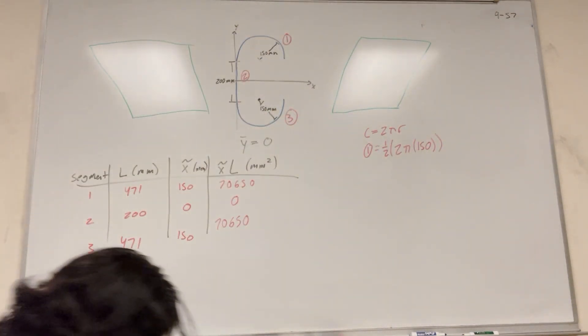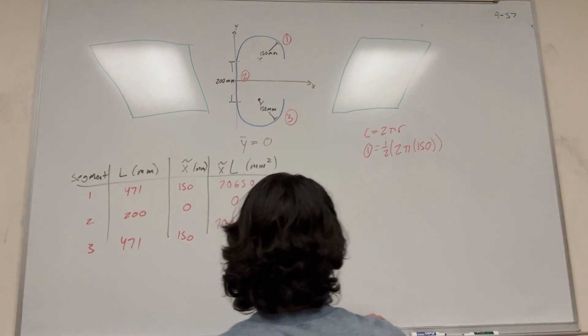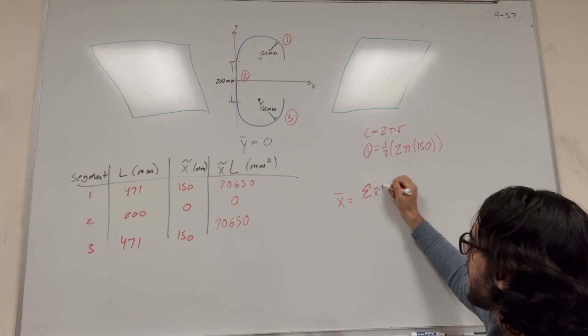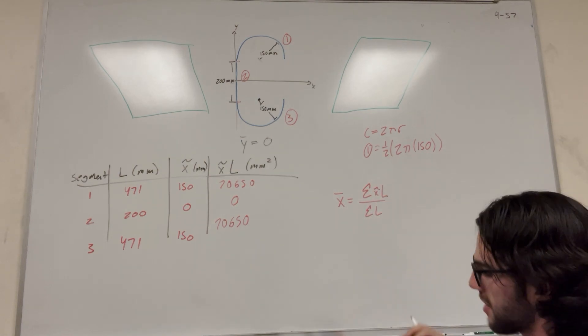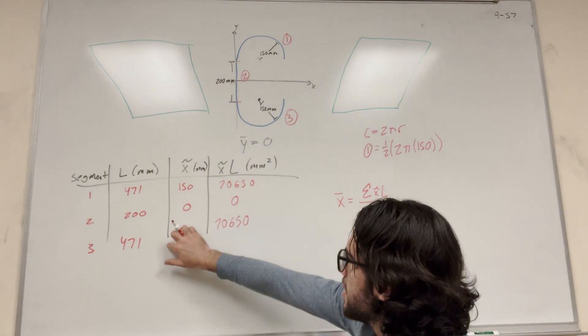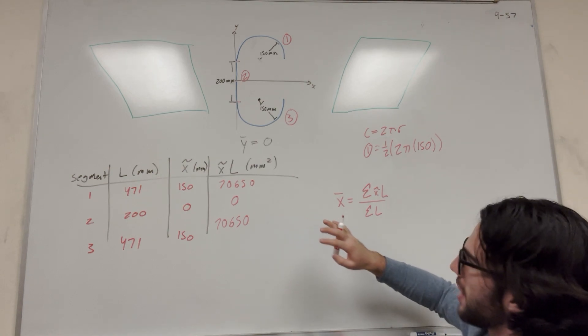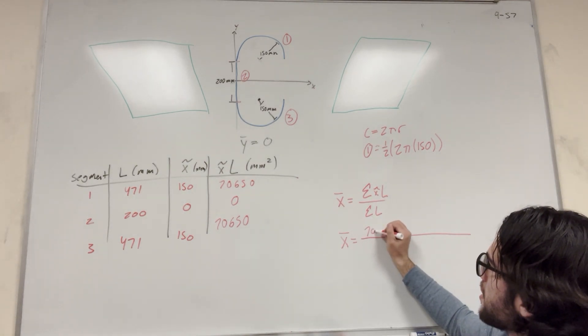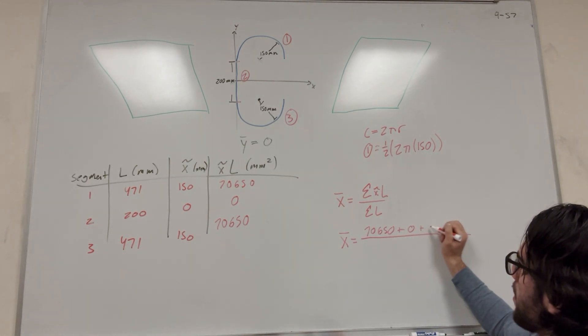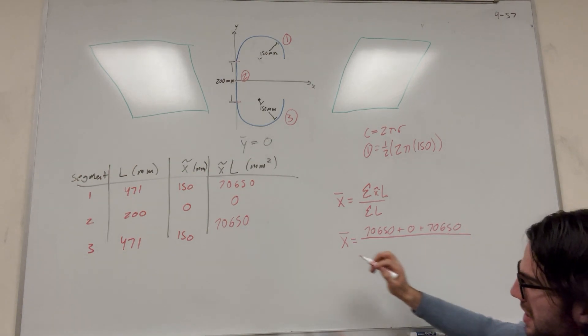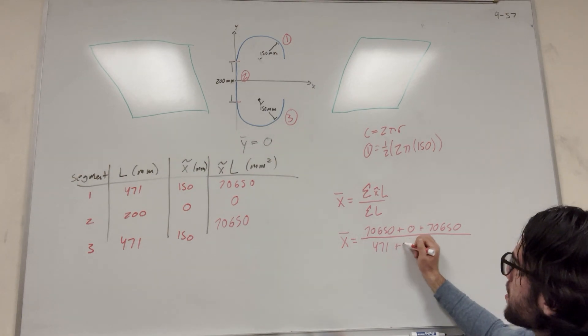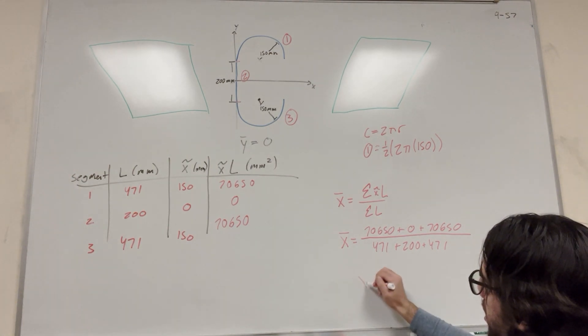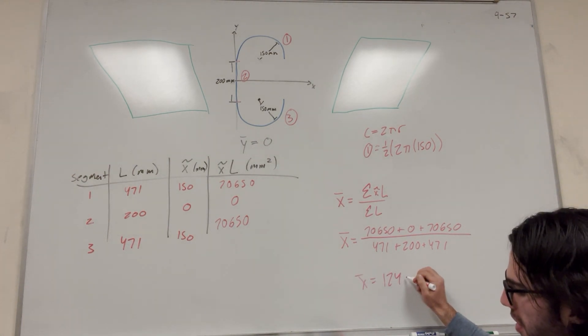Now that we have this table, we have everything we need to find x bar. X bar is equal to the sum of the x tilde L's over the sum of the lengths. We have the lengths, and we have the x tilde lengths. Now we just have to plug it in. Sum of these up, so it's going to be 7,650 plus 0 plus 7,650, and then sum of the lengths, 471 plus 200 plus 471. Easy enough. And then you're going to find x bar is equal to 124 millimeters.